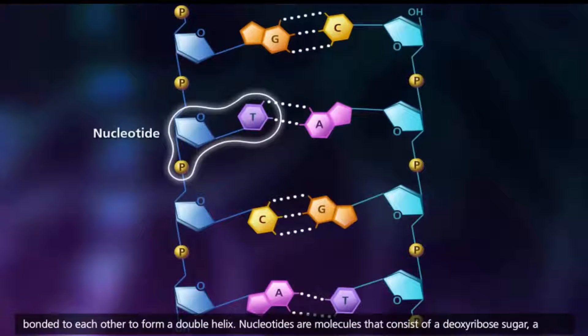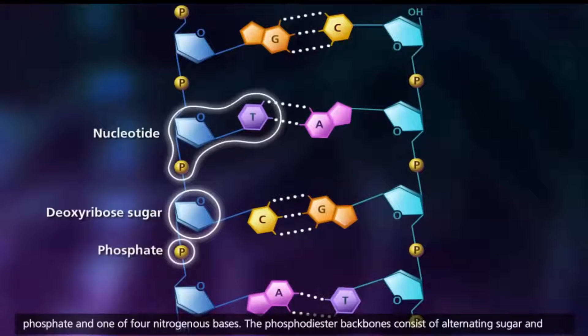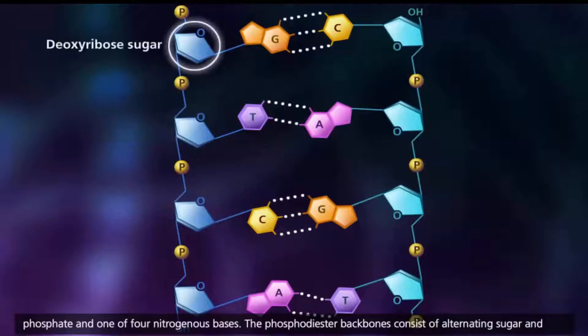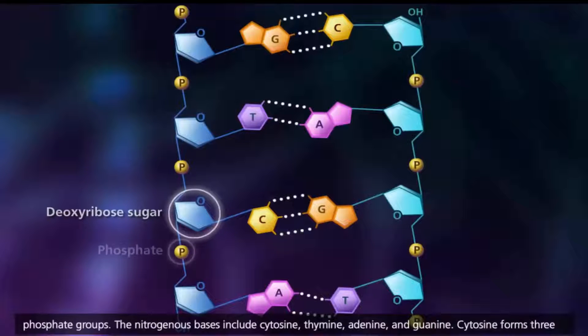Nucleotides are molecules that consist of a deoxyribose sugar, a phosphate, and one of four nitrogenous bases. The phosphodiester backbones consist of alternating sugar and phosphate groups.